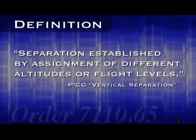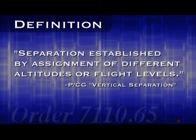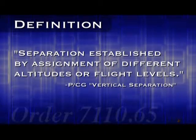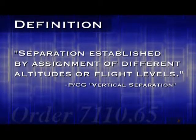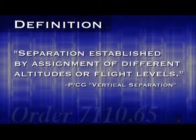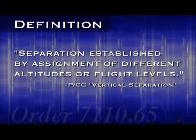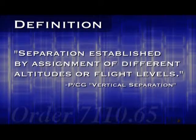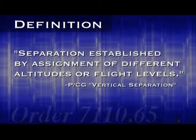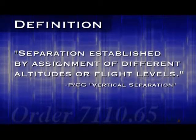The Pilot Controller Glossary defines vertical separation simply as separation established by assignment of different altitudes or flight levels. It sounds pretty simple, but as we'll see later, this is a tricky concept. There are a number of rules that go along with using this kind of separation, which are laid out in the 7110.65 in Chapter 5, Section 5.